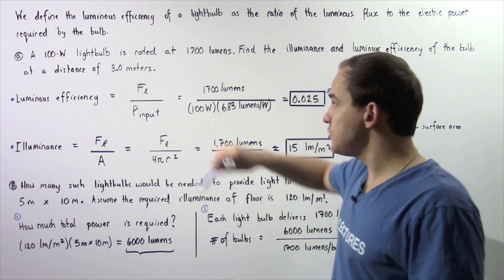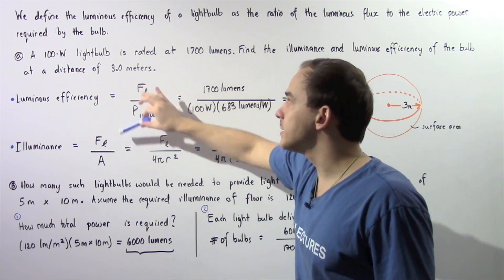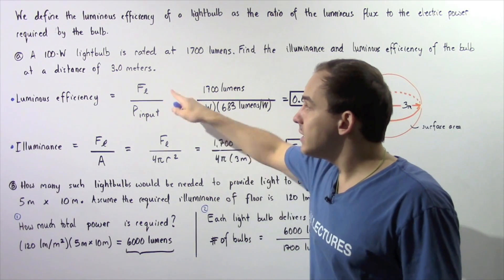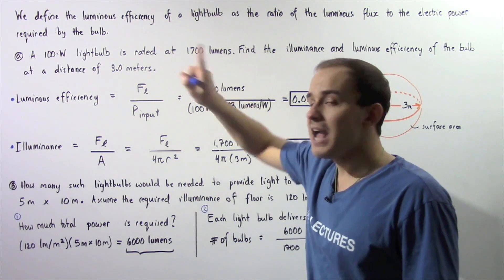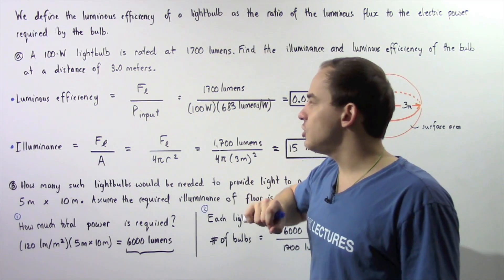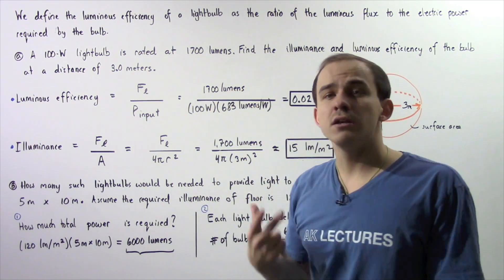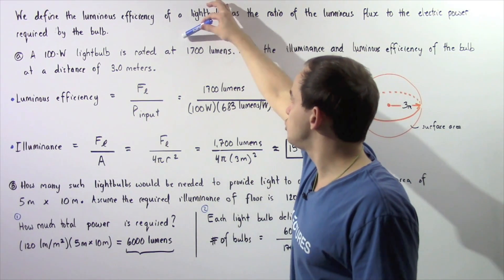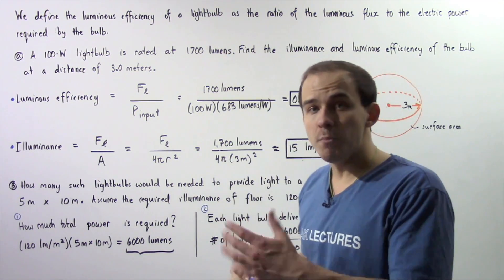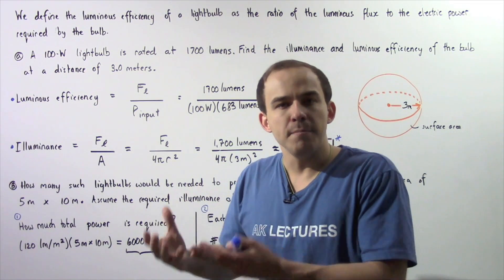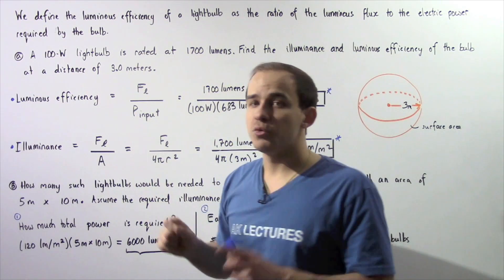That's equal to the ratio of the luminous flux to the power required by our bulb. Because this is a ratio, the units of the numerator has to be the same as the units of the denominator. Our numerator is the luminous flux which is equal to 1700 lumens. Remember lumens and watts both mean power.